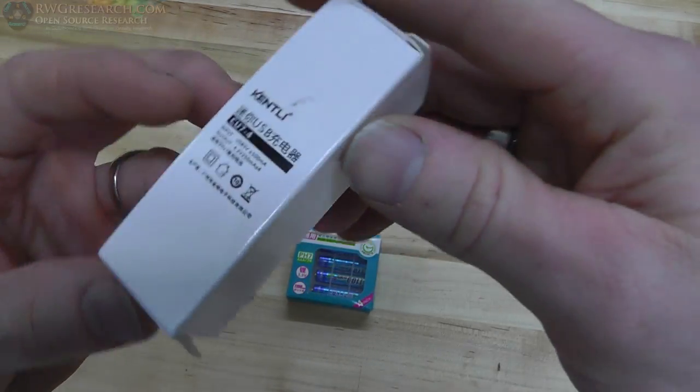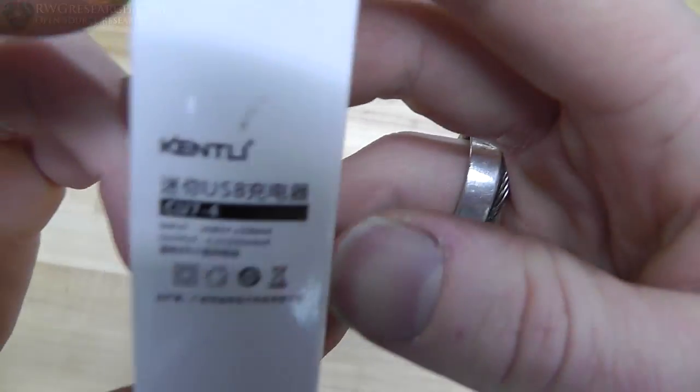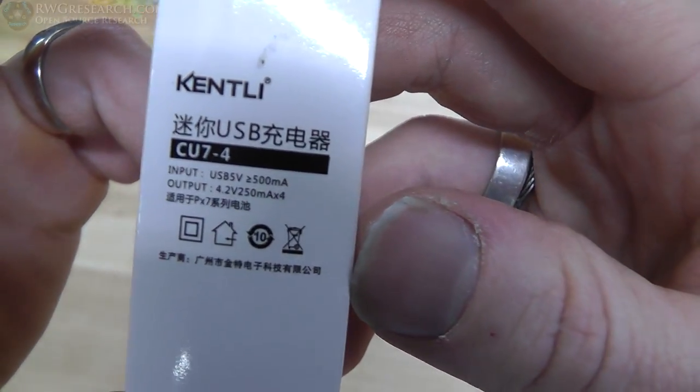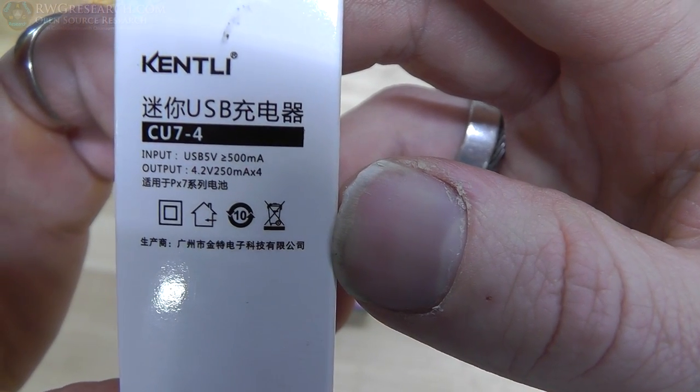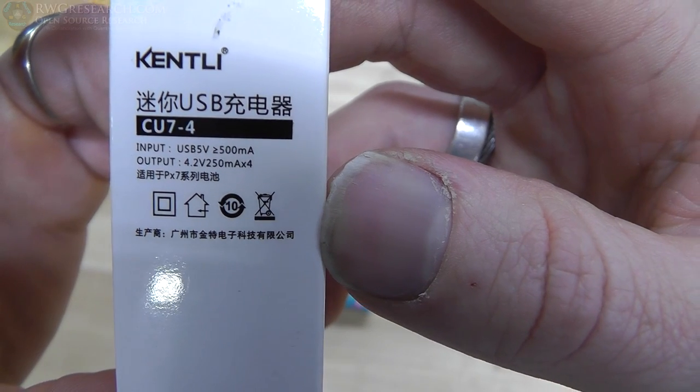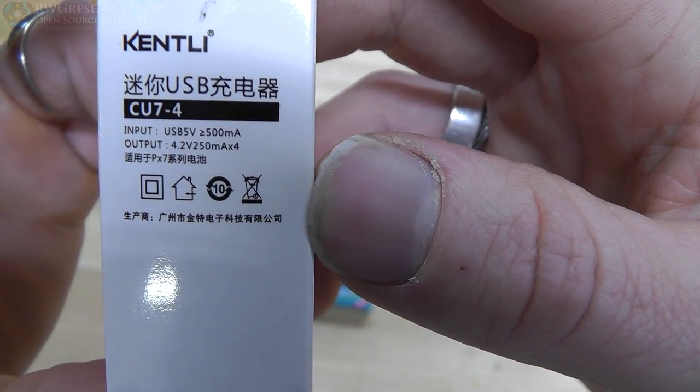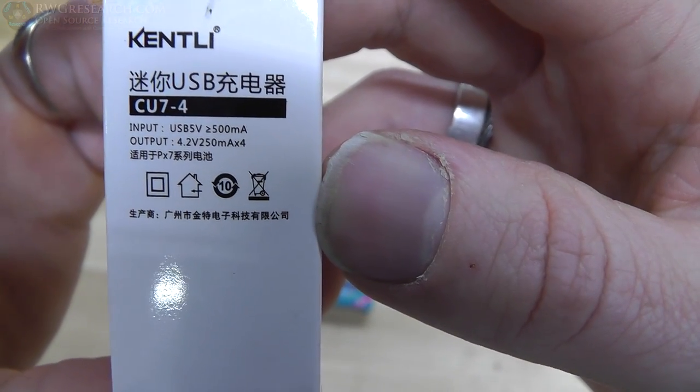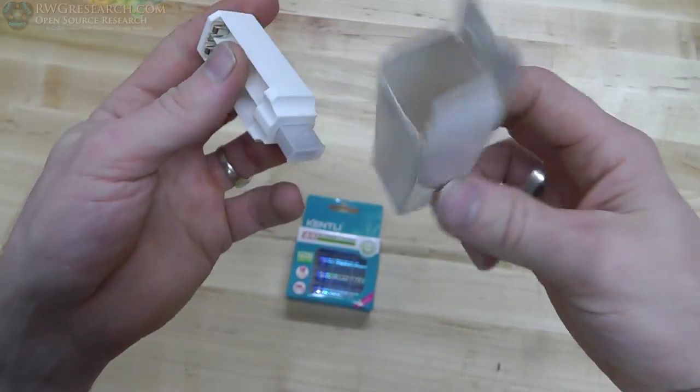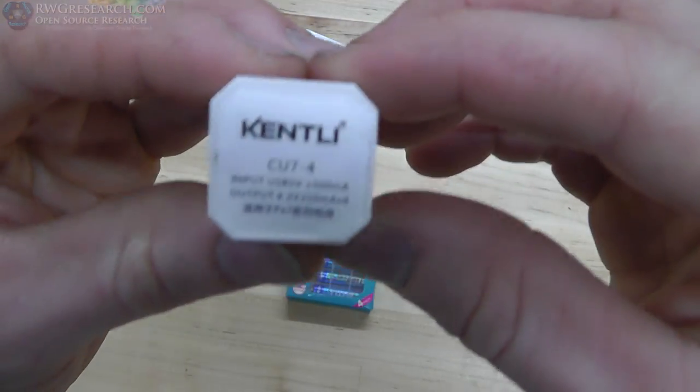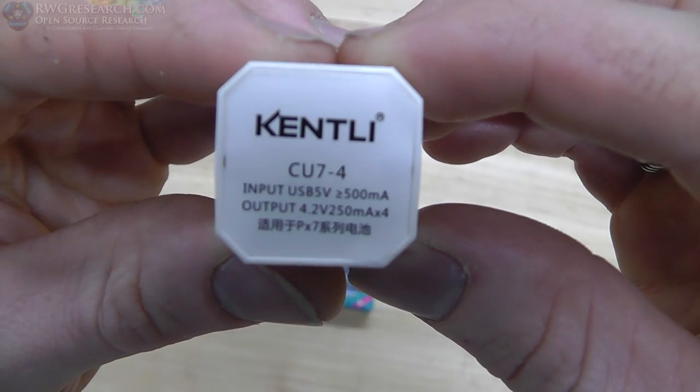So here's the charger. And if we can get it to focus, the charger actually says, USB 5-volt, 500 milliamps input, 4.2-volt, 250 milliamp times 4 output. What? And even on the back, it's got the same sort of thing here. It's got the same stuff.